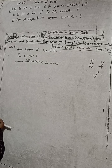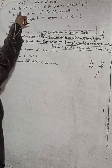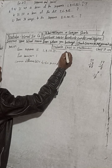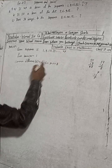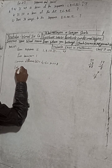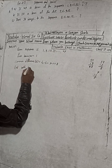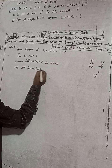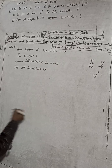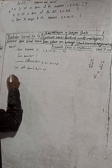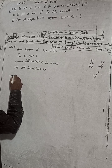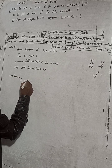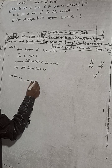Now, is 49 a term of this sequence? We suppose that 49 is some nth term somewhere. Let the nth term Tn = 49. We know the formula: Tn = A + (n minus 1) times D.